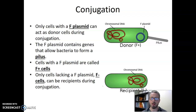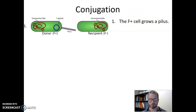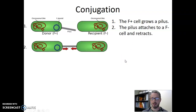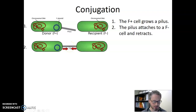Let's look more closely at how the process works, step by step. First, the F plus cell grows the pilus. The F plus donor has the F plasmid, so it has the information needed to grow a pilus. The F minus cell is nearby and lacks the plasmid, so it can't grow a pilus of its own. Next, the pilus attaches to the F minus cell and then retracts — it tightens, pulling the two cells closer together. Now the pilus is connecting the F plus and the F minus cells to one another.